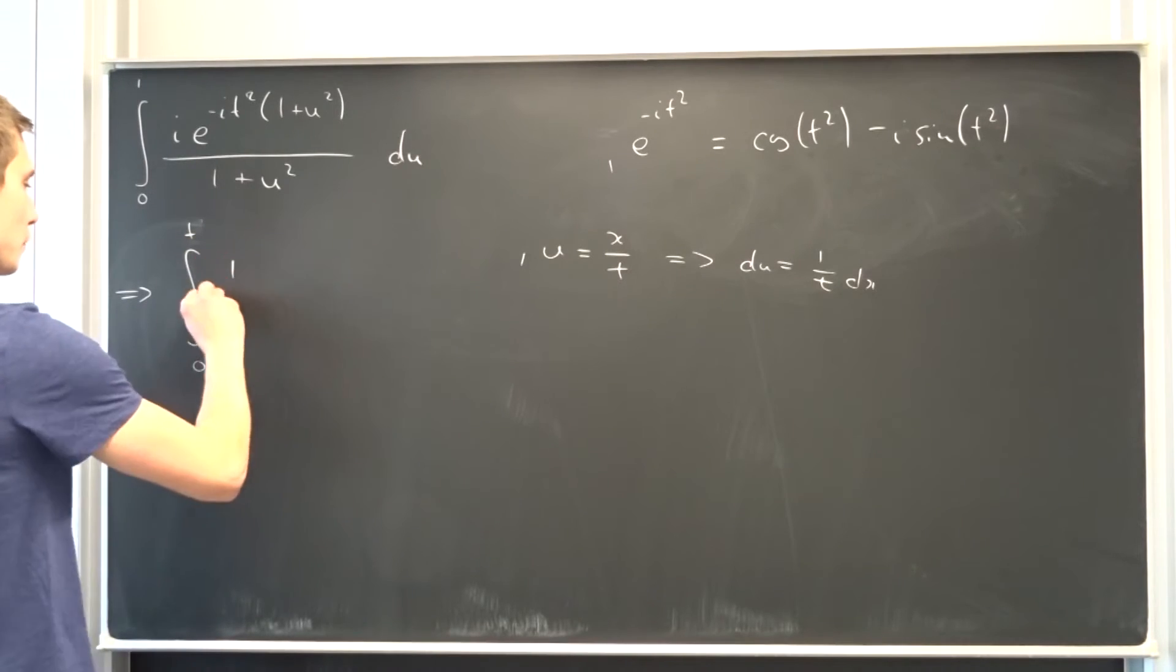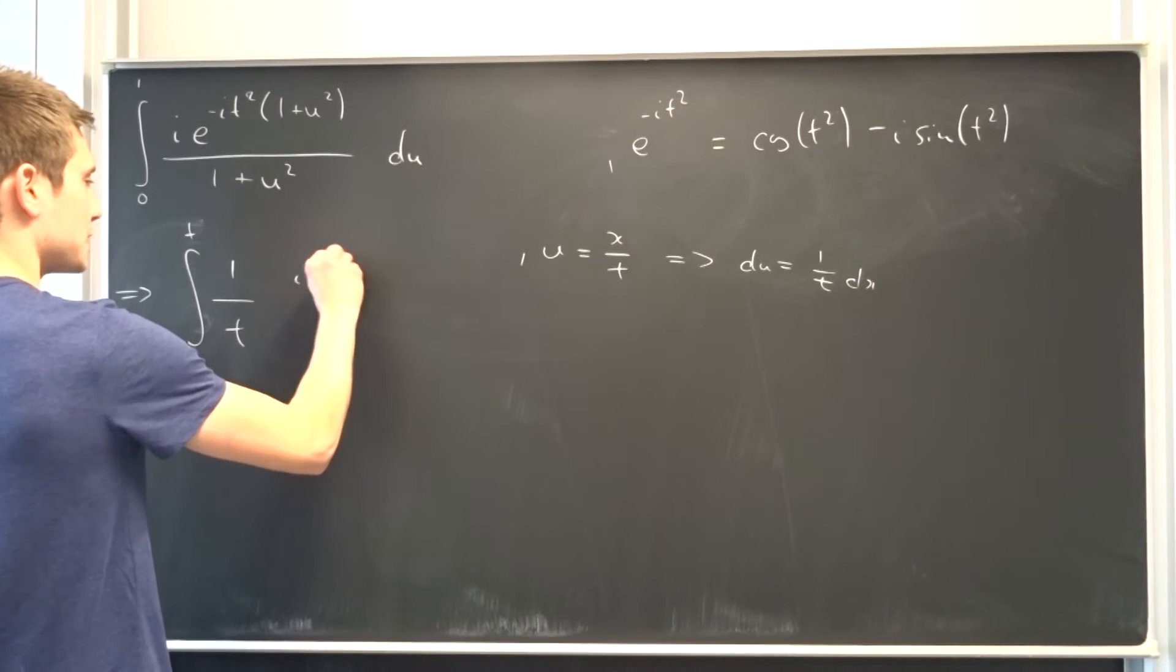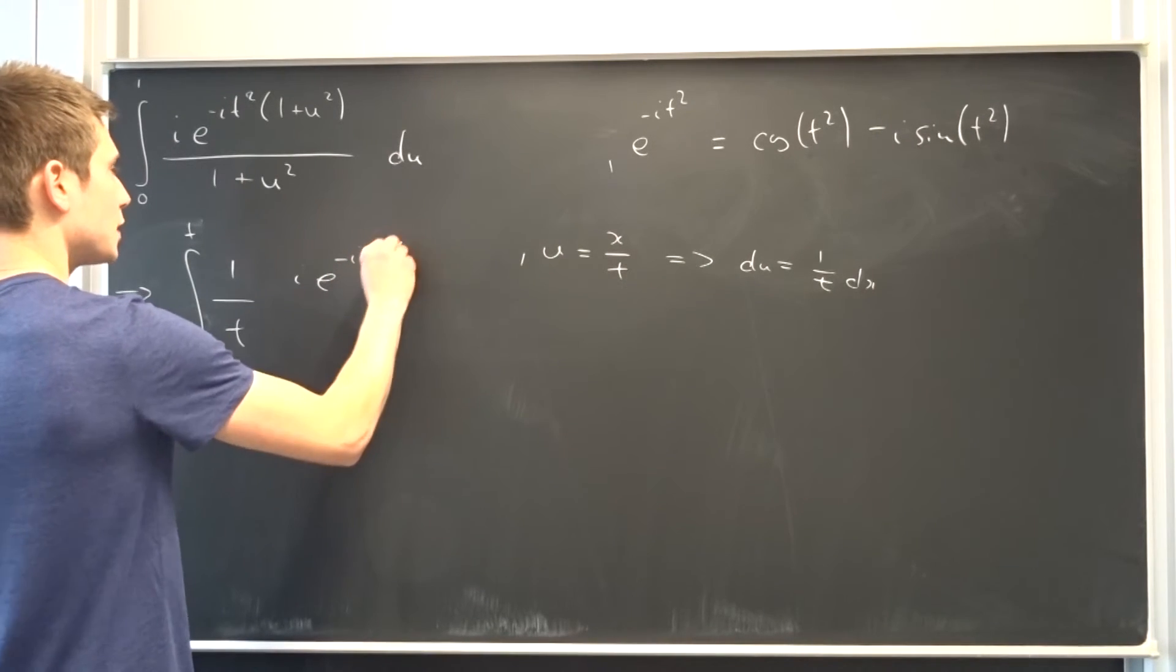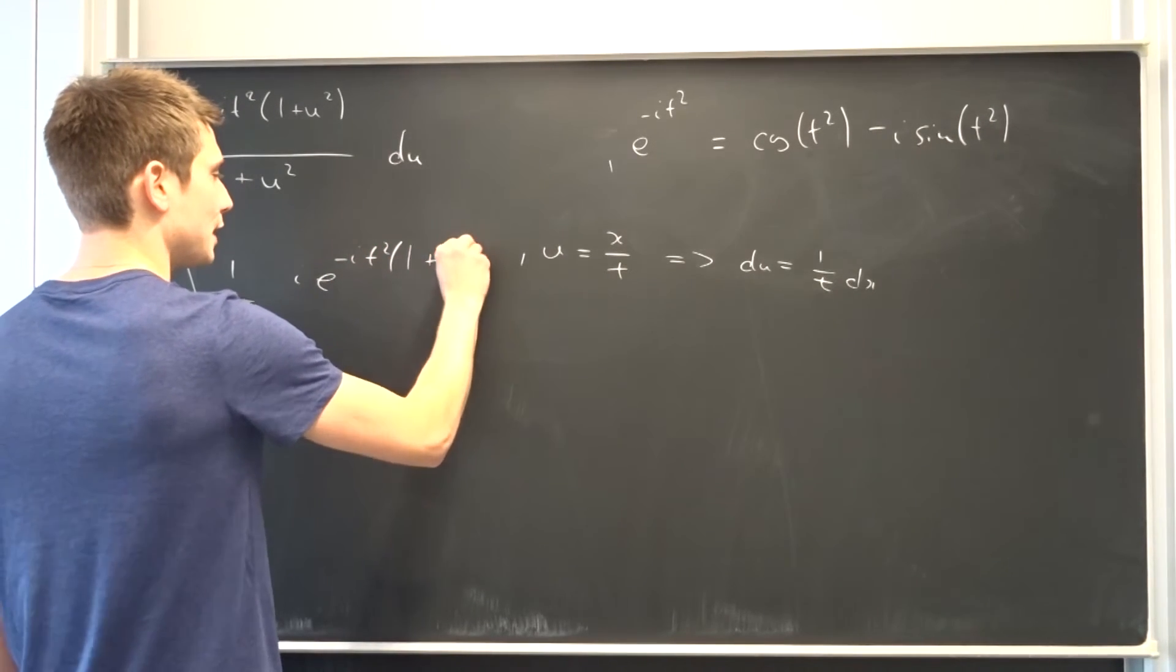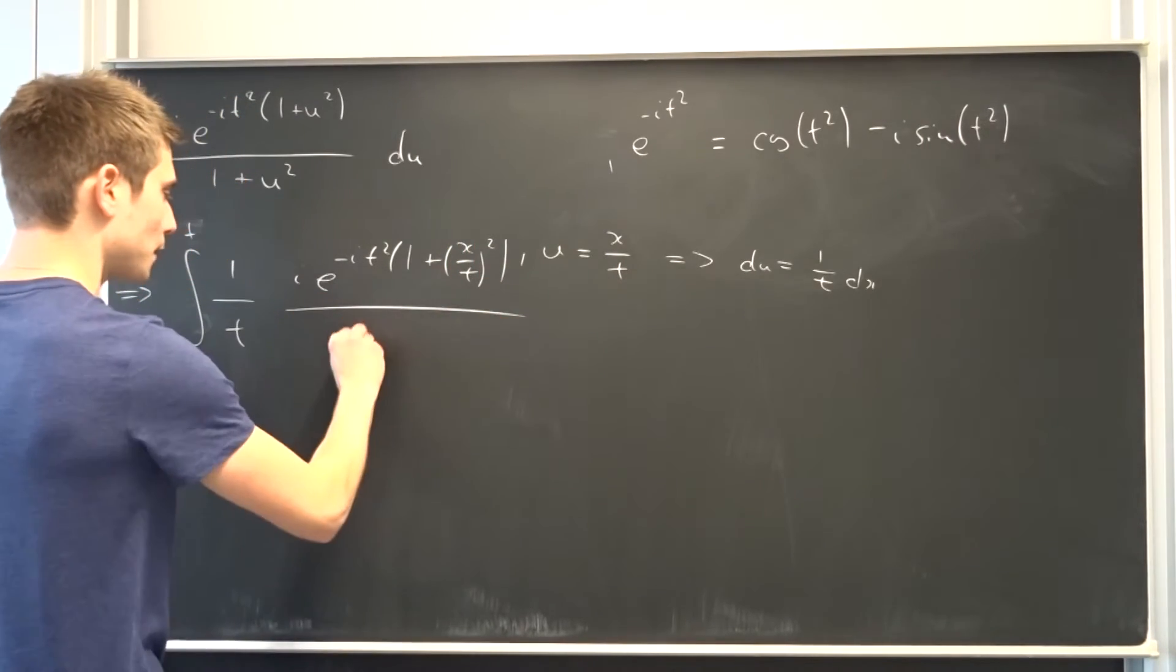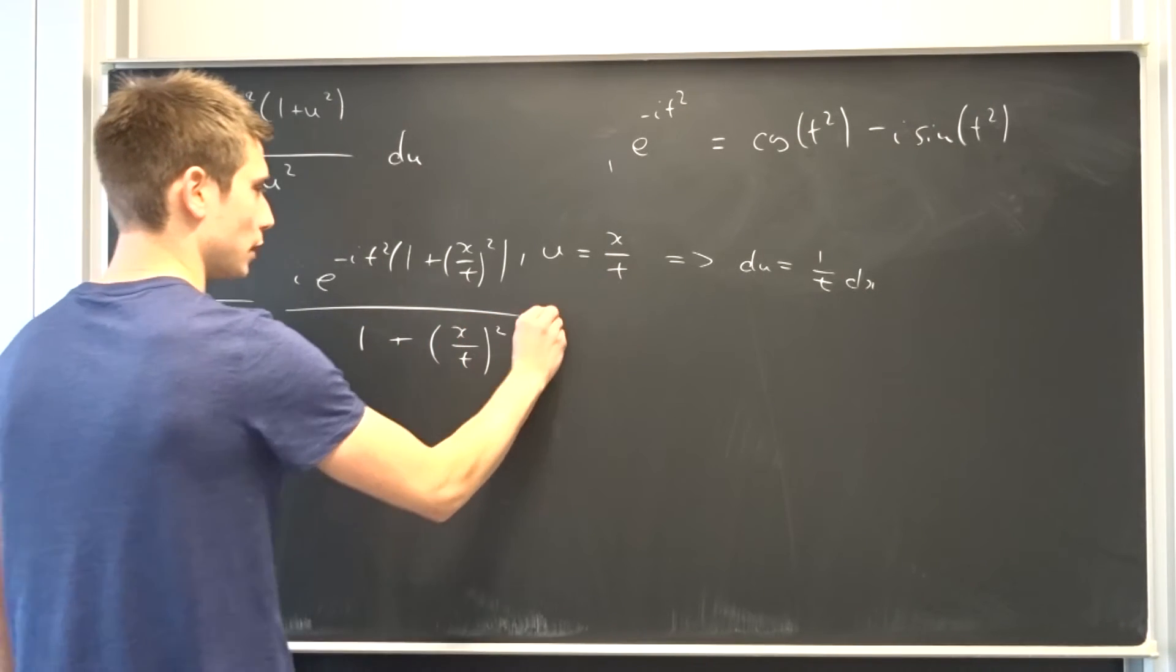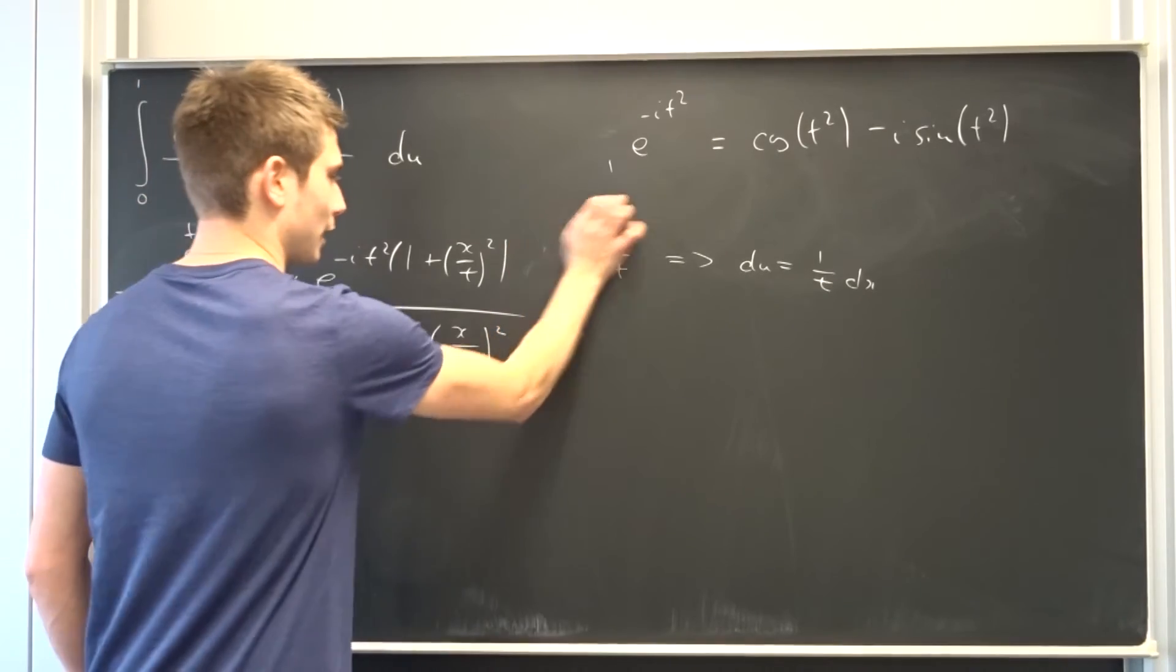So what we end up with is the integral from 0 to t of 1 over t, so that's this term, times i times e to the minus i t squared times 1 plus x over t but the whole thing squared, over 1 plus x over t squared, times dx. Okay.